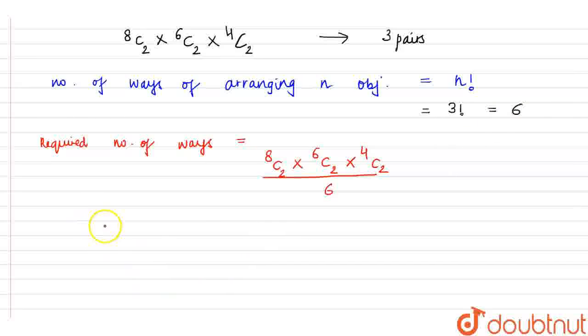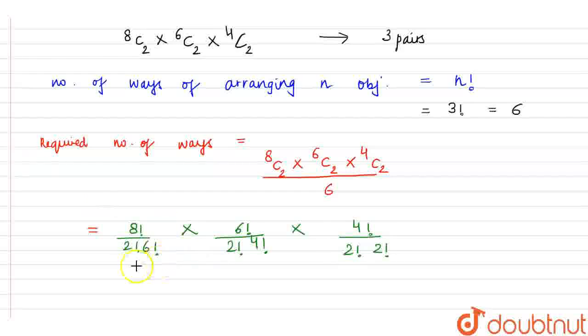Now let us now solve this. It becomes equals to 8 factorial upon 2 factorial into 6 factorial into 6 factorial upon 2 factorial into 4 factorial into 4 factorial upon 2 factorial into 2 factorial and this whole upon 6.